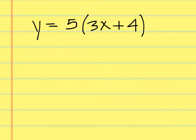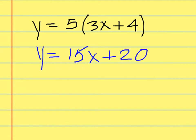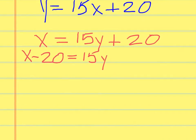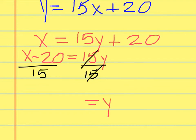Find the inverse of y equals five times the quantity three x plus four. There's no rule against simplifying first — distribute the five to get 15x plus 20. Then switch x and y: x equals 15y plus 20. Isolate y by moving the 20 over and dividing both sides by 15. The inverse equals x minus 20 over 15.